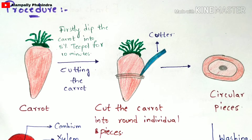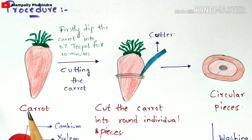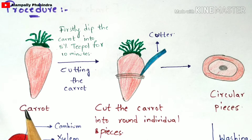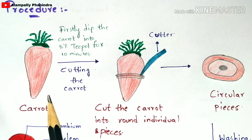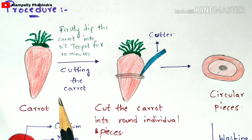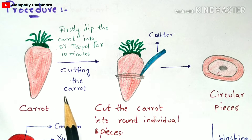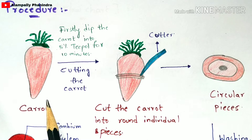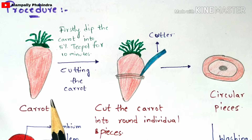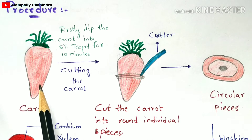Now let's learn the procedure of callus culture. First, you choose a carrot — I've chosen carrot for convenience, but you can choose any other vegetable or plant material. Since the carrot grows in soil, after removing it you wash it to remove dust and soil particles from its surface.